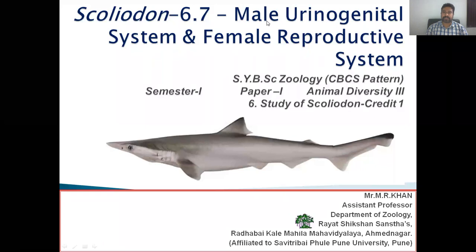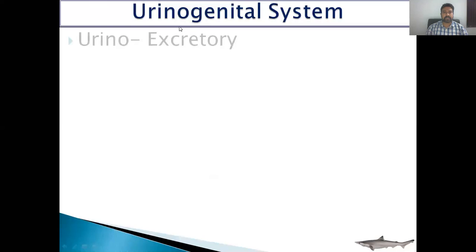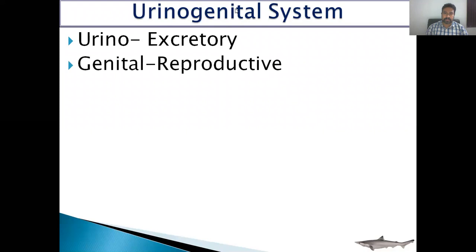So let's start from what is the urinogenital system. This urinogenital system is made up of two words: urino and genital. Urino means excretory and genital means reproductive. In the case of vertebrates, both excretory and reproductive systems are very closely related with each other, and that's why we study both topics together in the urinogenital system.